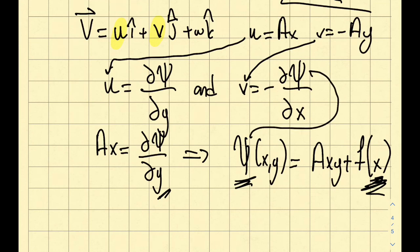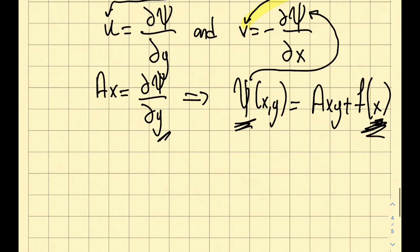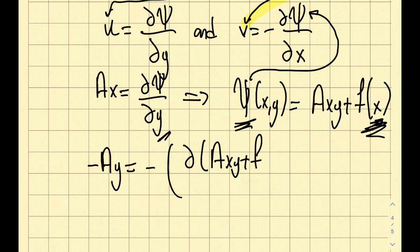So let me do it. I'm just going to plug the stream function into the second equation and you can see the arrow over here, how the V will be inserted. So if I follow this, I should be able to obtain myself what F of X is. Let's just do it. V, which is minus A, Y in the question statement, is equal to minus of del A, X, Y plus F of X with respect to X, right?